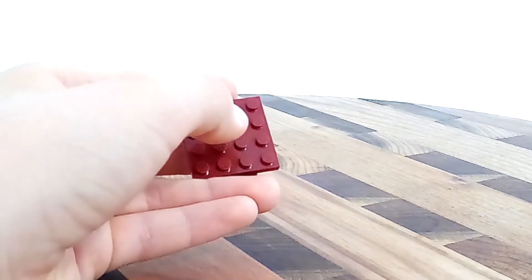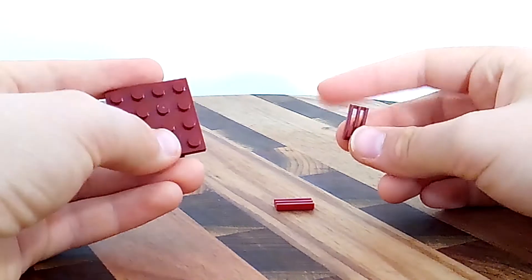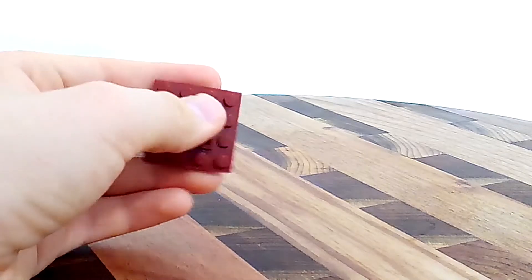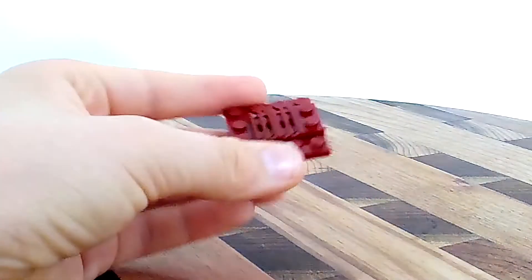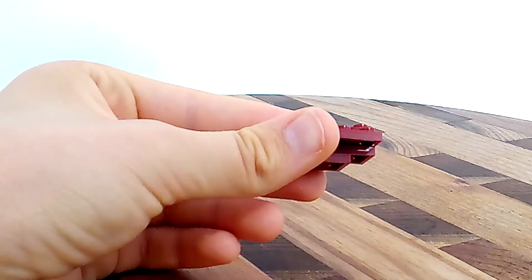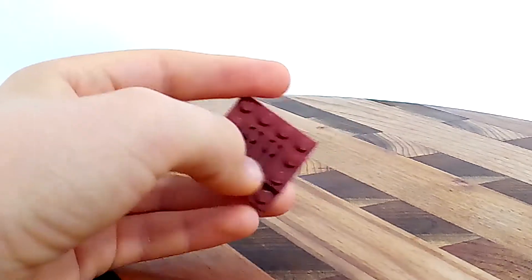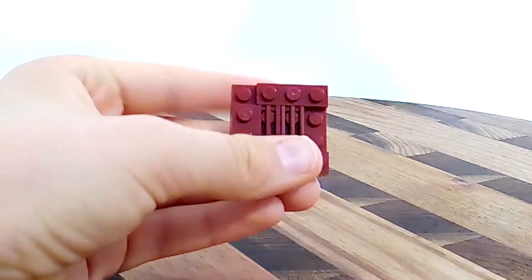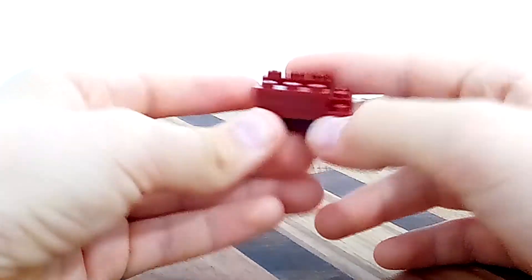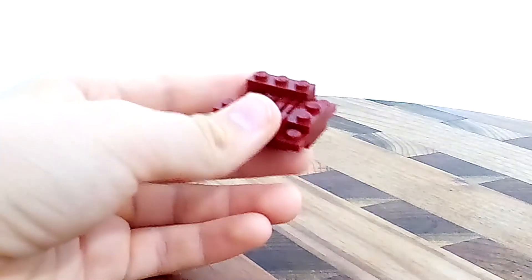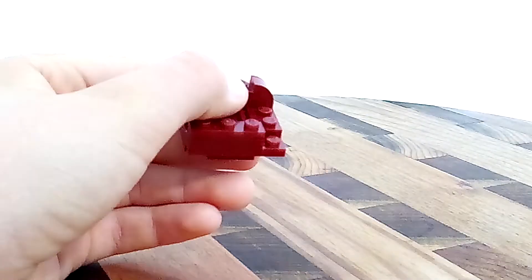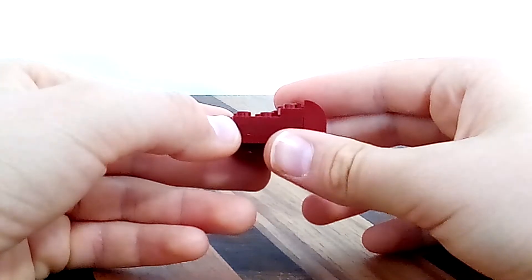Now you will need two of these dark red grill pieces, and they just go like that. You should have something that looks like that. Now you take these and you make these into a little thing like that. Then you have these slopes, and they just go there.